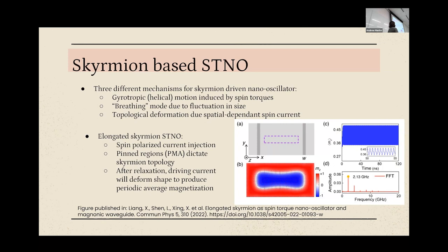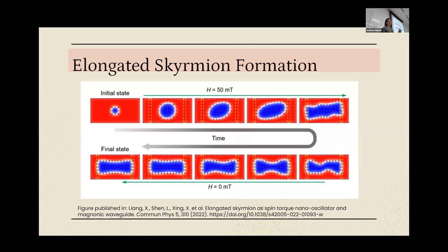After relaxation, the important finding of this study is that the net average magnetization in the z-component — coming out of the plane — will oscillate. The amplitude is periodic, and using a fast Fourier transform you can see it is operating in the microwave range at about 2.1 GHz. You have this oscillating magnetization, which is the key component of magnonics. This shows how they went about it experimentally.